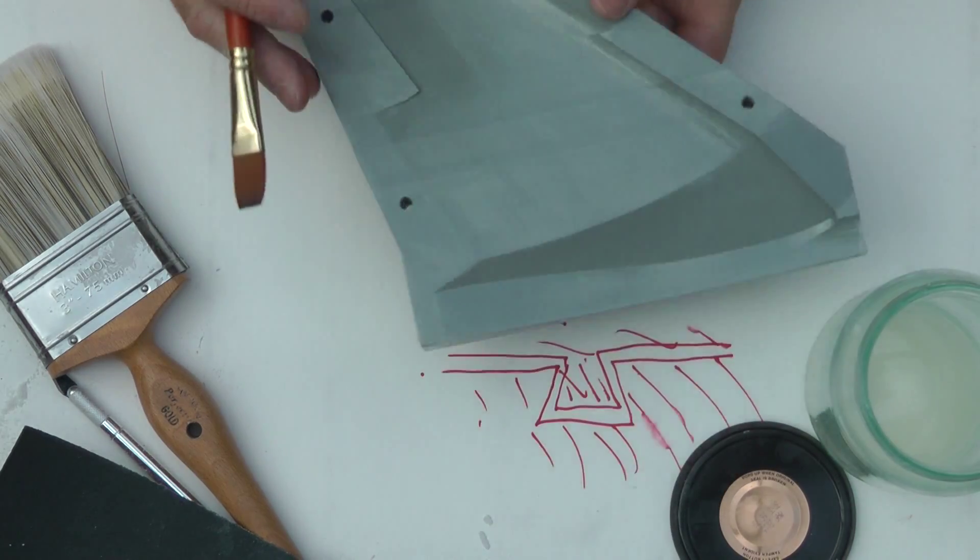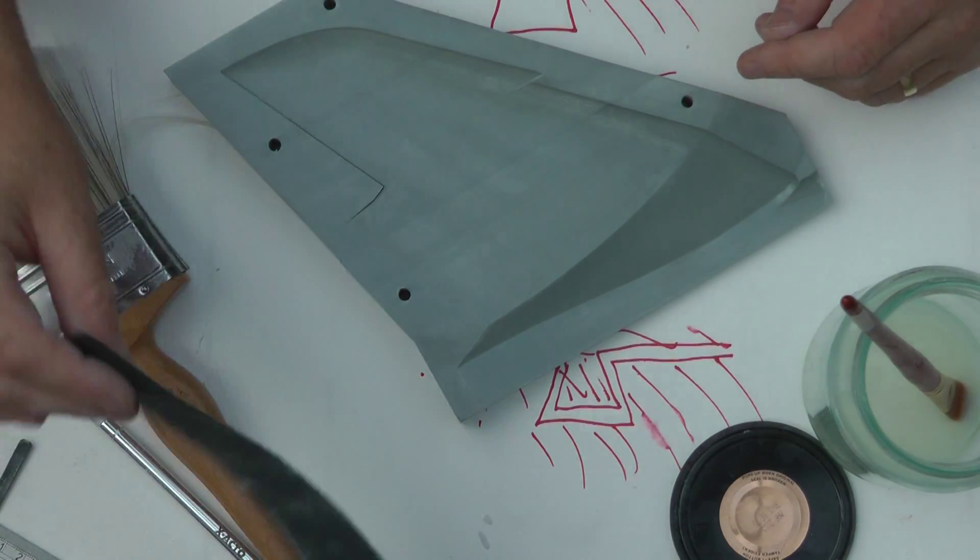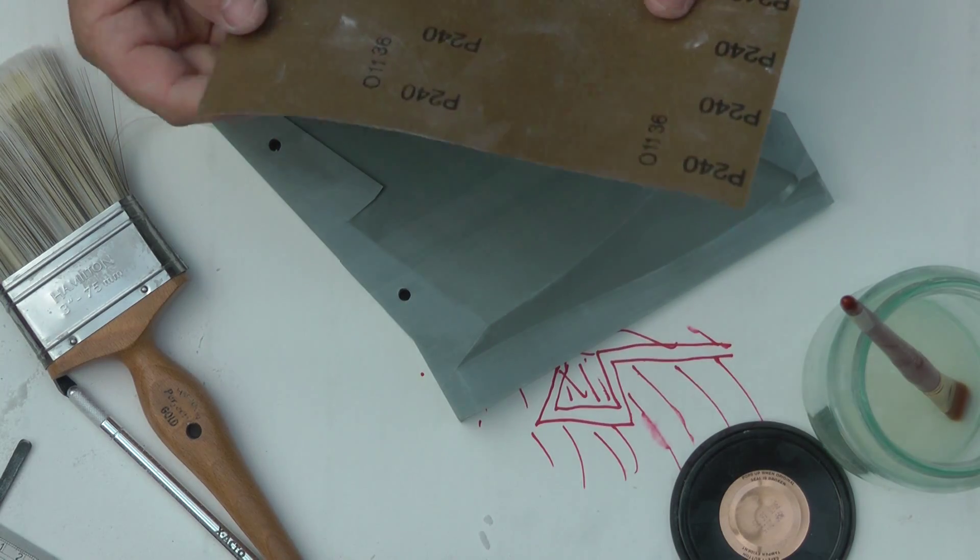So we use the 240, we use 400 grit sandpaper next time. And all we're going to do is basically sand out all the scratches made by the 240 grit.